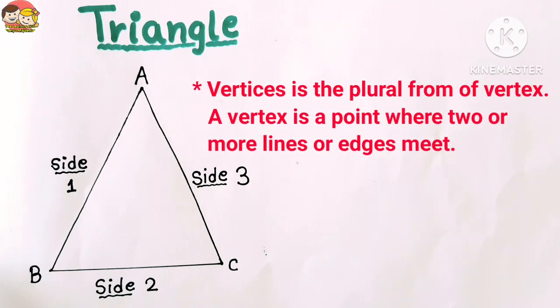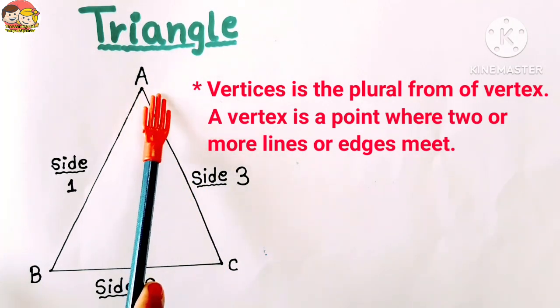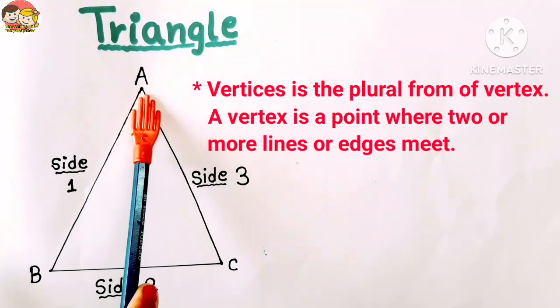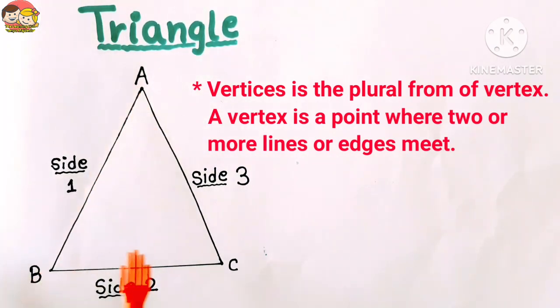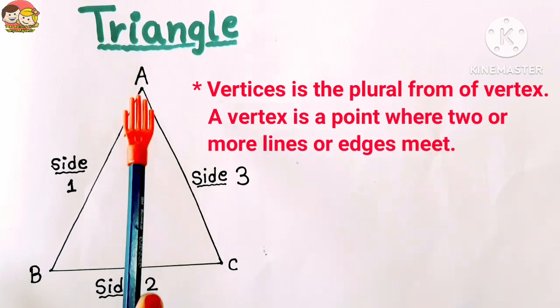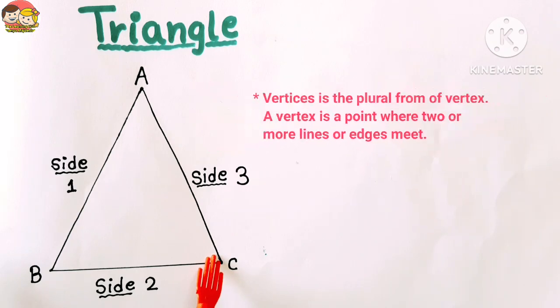Vertices is a plural form of vertex. A vertex is a point where two or more lines or edges meet. So here A, B, and C are vertices. So there are three vertices in a triangle shape. Vertices are sometimes called corners.